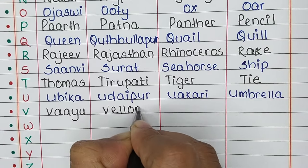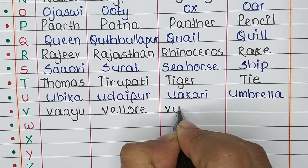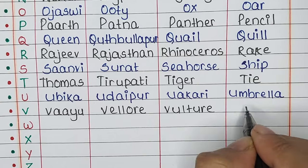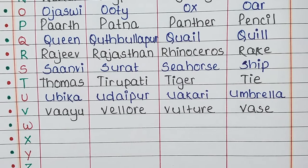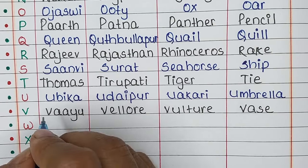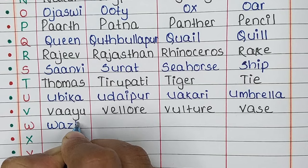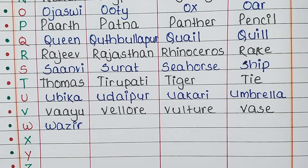Next is letter V. The name is Vayu, the place is Vellore, the animal is Vulture, and the thing is Vase.